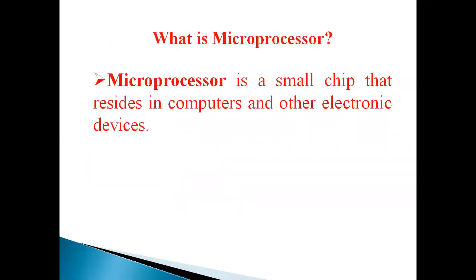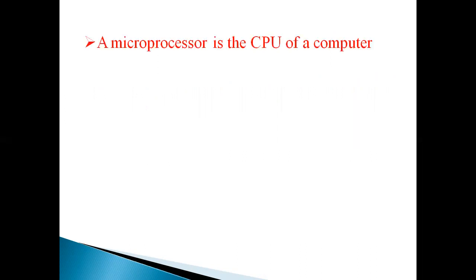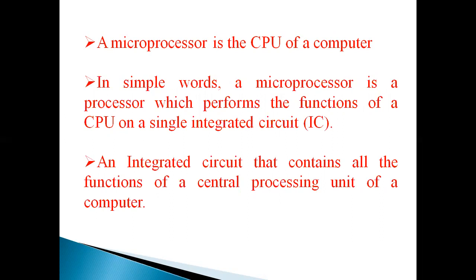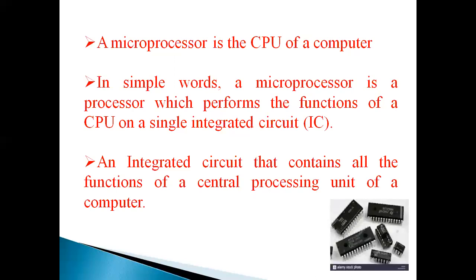What is microprocessor? Microprocessor is a small chip that resides in computers and other electronic devices. It is an electronic component that is used by a computer to do its work. A microprocessor is a CPU of a computer. In simple words, a microprocessor is a processor which performs the function of a CPU on a single integrated circuit. An integrated circuit that connects all the functions of a central processing unit of a computer. So this is an image of integrated circuit.